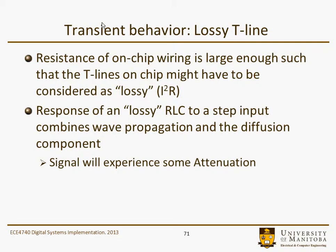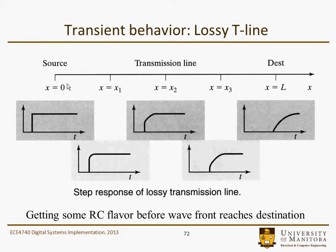Other things we might have to consider are a lossy transmission line. This is where the resistance of the on-chip wiring is large enough such that the T-line on chip might have to be considered as lossy — they effectively have I-squared-R kind of loss. The response of a lossy RC line to a step input combines wave propagation characteristics as well as a diffusion component, so basically the signal will experience some attenuation. This is a schematic illustration: we apply a step at x equals zero, and some time of flight later, at x equal x2, we get a rounding out of that voltage edge.